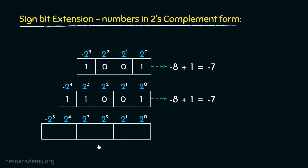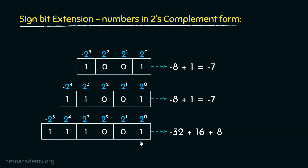Similarly, in case of a 6-bit register, the most significant place retains the place value minus 2 raised to the power 5. Suppose we store the value 111001. This one gives us minus 32, this one gives us 16, this one gives us 8, and this one gives us 1. Minus 32 plus 16 gives us minus 16, minus 16 plus 8 gives us minus 8, and minus 8 plus 1 gives us minus 7. So if minus 7 is stored in twos complement form in a 6-bit register, the register retains the value 111001.